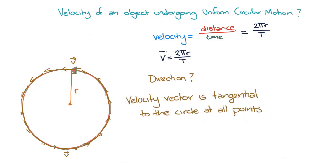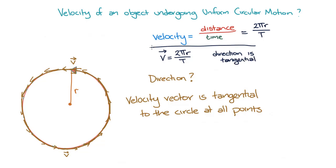So, in summary, the velocity of an object undergoing uniform circular motion has a magnitude of 2πr on T, and the direction of the velocity is tangential to the circle on which the object is undergoing uniform circular motion.